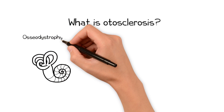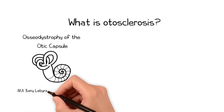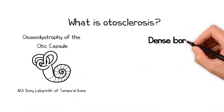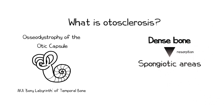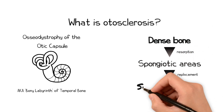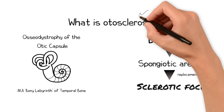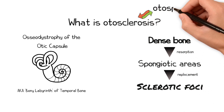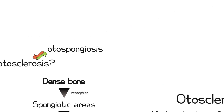Otosclerosis is an osteodystrophy limited to the otic capsule. In this process, the normal dense bone of the otic capsule is first resorbed, leading to less dense or spongiotic areas, before being replaced by more dense, sclerotic foci. Therefore, both terms — otospongiosis or otosclerosis — can be used to describe this condition.